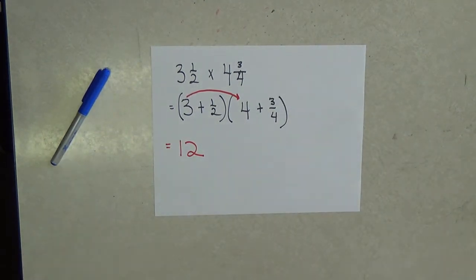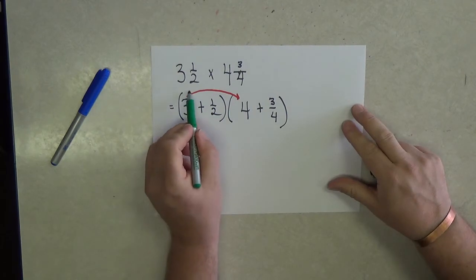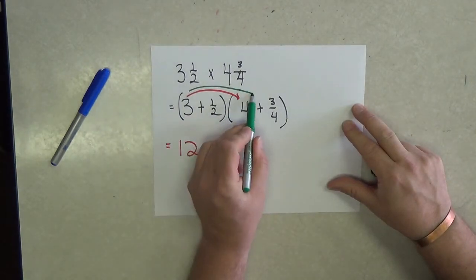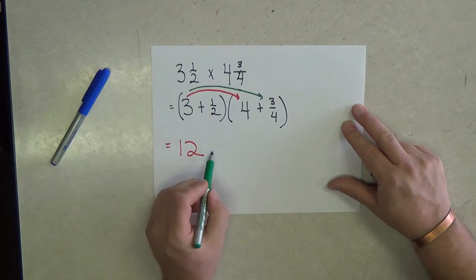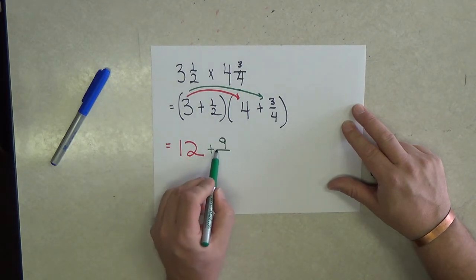Now the second partial product will come from 3 times 3 fourths. Well, 3 times 3 fourths, that will be 9 fourths.